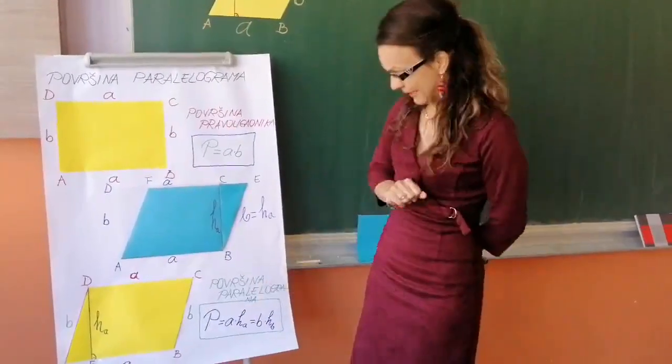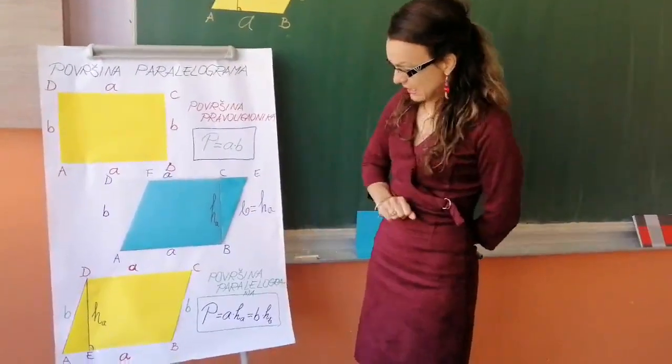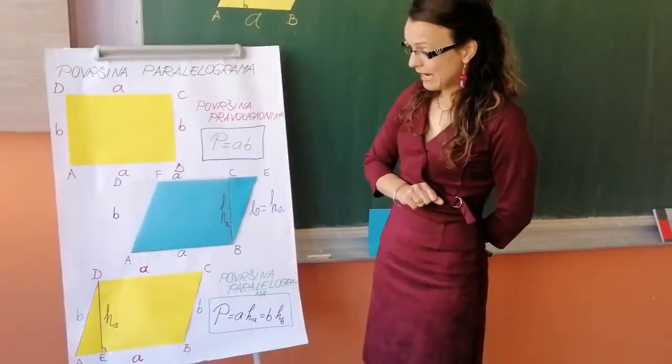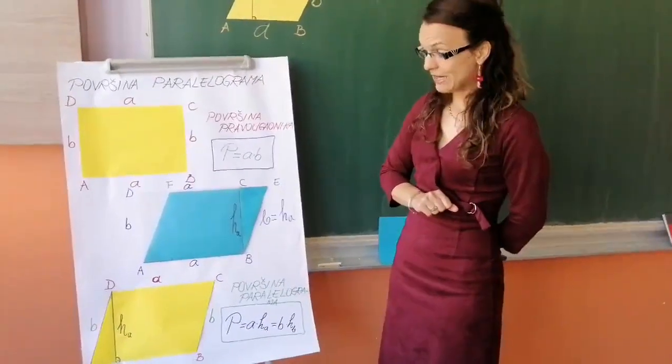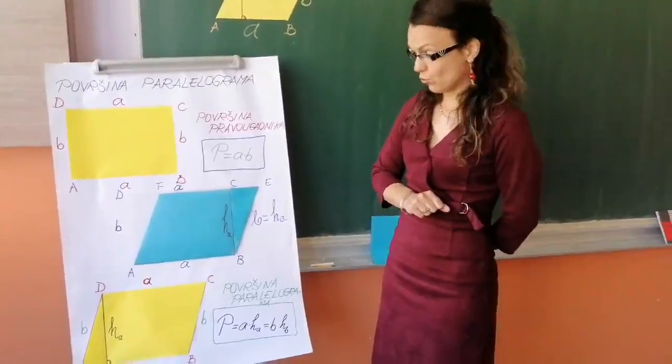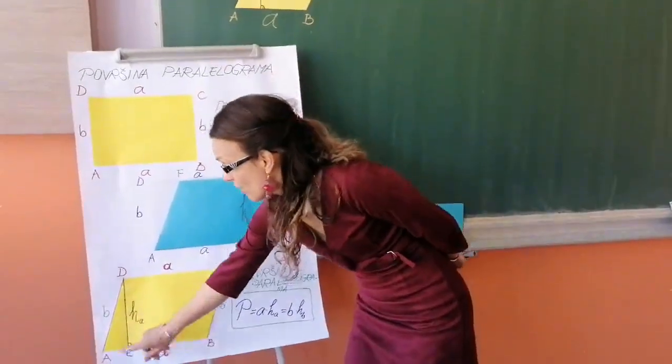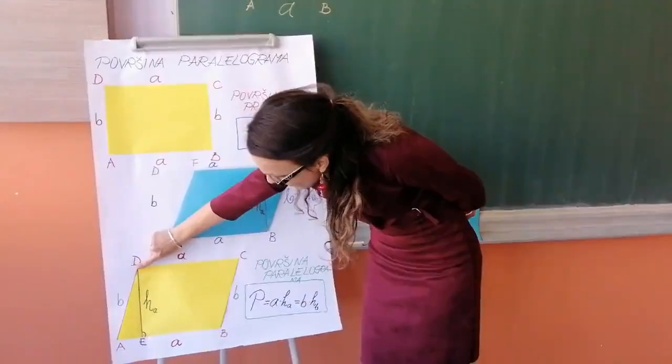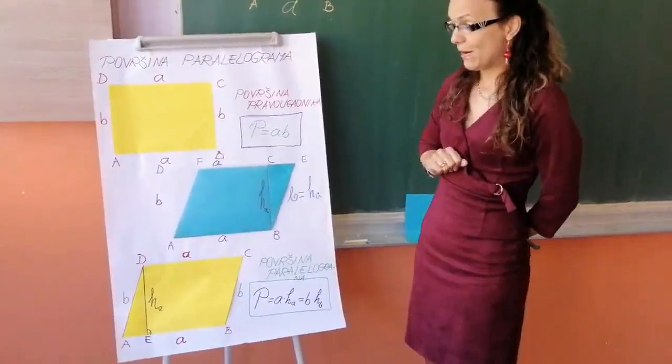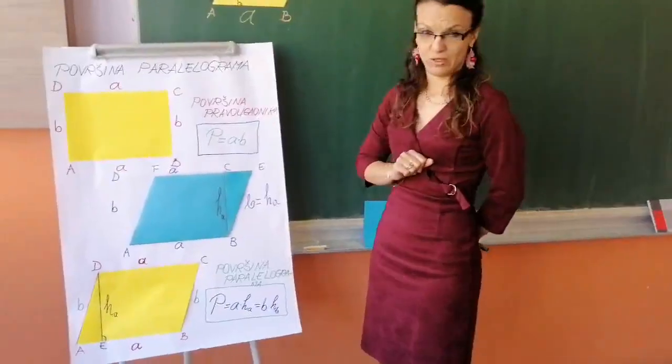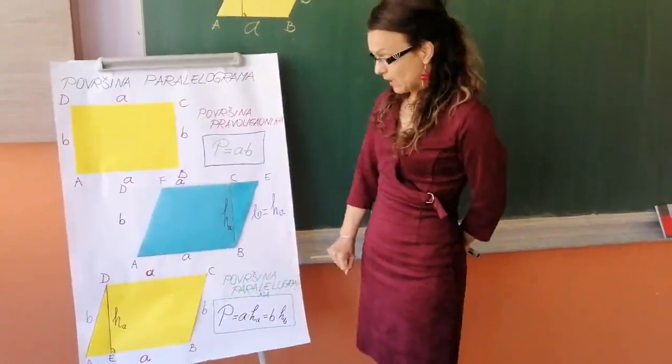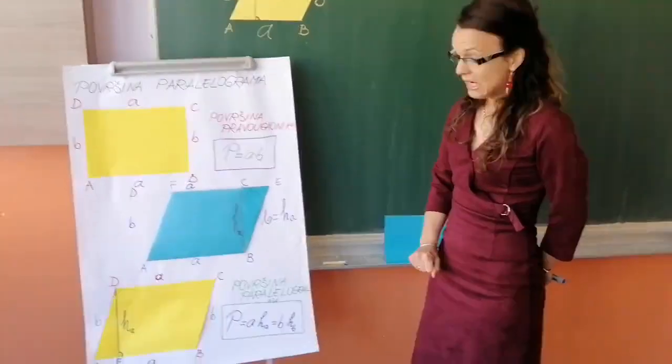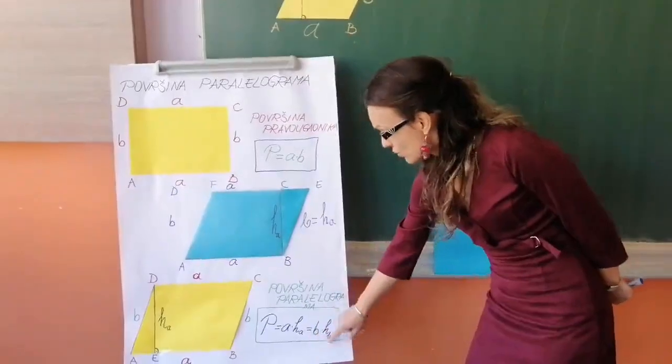Što je ovdje i prikazano. Ovu svoju formulu nadopunila sam sa još jednim dijelom, B puta hab, iz razloga što naš paralelogram ima dva para paralelnih naspramnih stranica. Ako su te stranice različite dužine, znači stranici A odgovarat će ova visina ha, ali mojoj stranici B odgovarat će njena visina hab. Pa zavisnosti od podataka u sklopu zadatka koje budemo imali, ako budemo imali poznatu stranicu A i njenu visinu ha koristit ćemo tu formulu, a ako budemo imali podatak B i njenu odgovarajuću visinu koristit ćemo ovu drugu formulu.